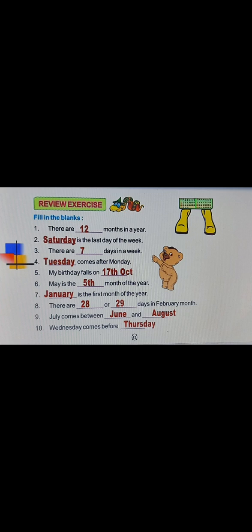February has ___ or ___ days. There are 28 or 29 days in February, depending upon whether it is an ordinary year or a leap year. July comes between ___ and ___. July comes between June and August.